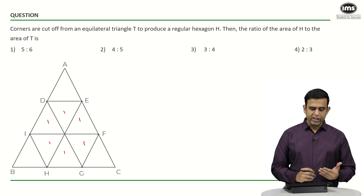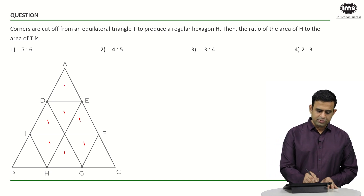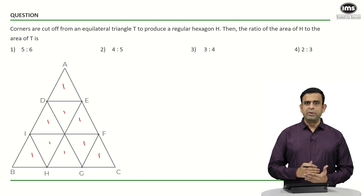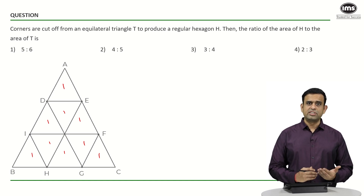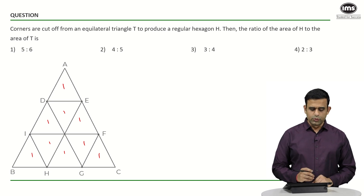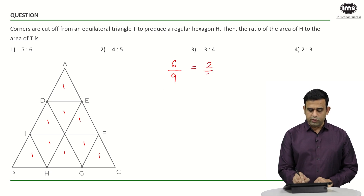If each of those six triangles has an area of 1, then the corner pieces — triangles ADE, BIH, and CFG — also each have area 1. So the bigger triangle ABC comprises nine such triangles, and the hexagon DEFGHI comprises six. The ratio is therefore 6/9, which simplifies to 2/3.